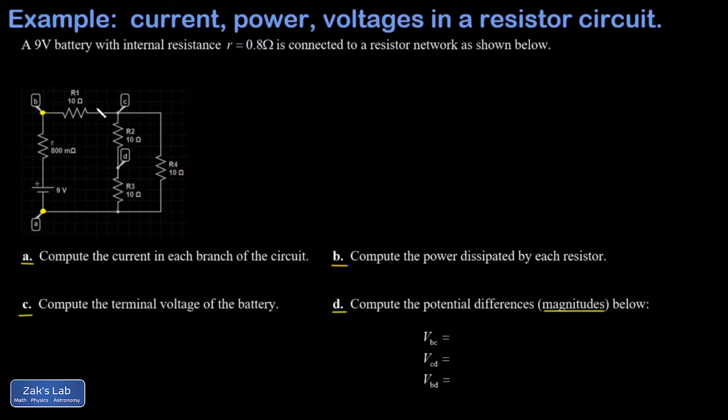So just to prepare for part A, I'm going to label the currents here in each branch. I'm going to call this I1 coming into node C, and then I2 running through the middle branch, and I3 running through the right-hand branch of the circuit.